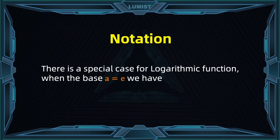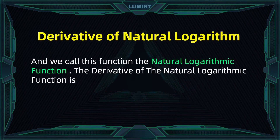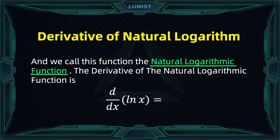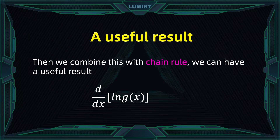There is a special case of logarithm functions when the base a is equal to e. When that happens, log of x base e becomes the natural logarithm, or ln of x. The derivative of a natural logarithm function is always equal to 1 over x. Combined with the chain rule, the derivative of ln of an interior function is the derivative of the interior function over the function itself.